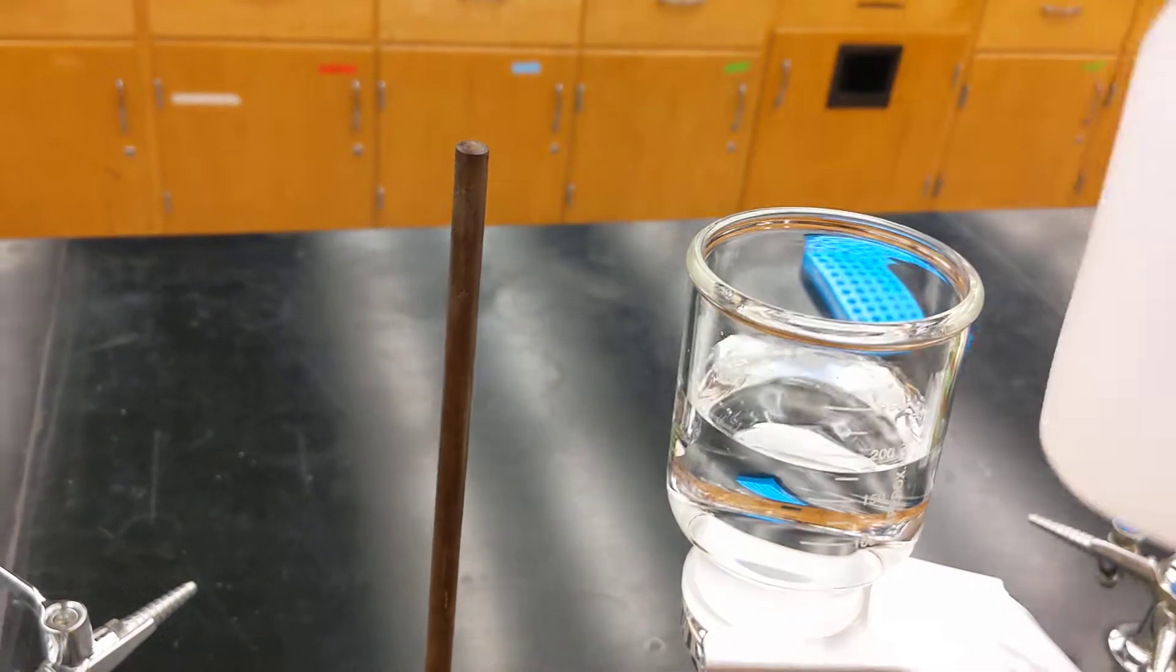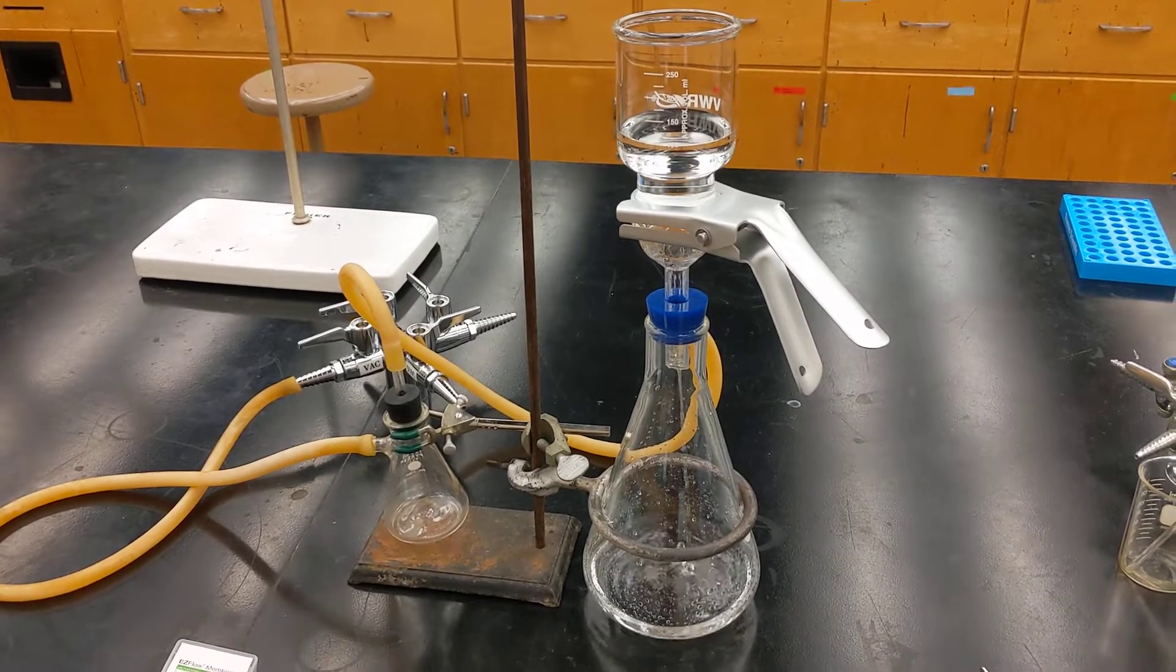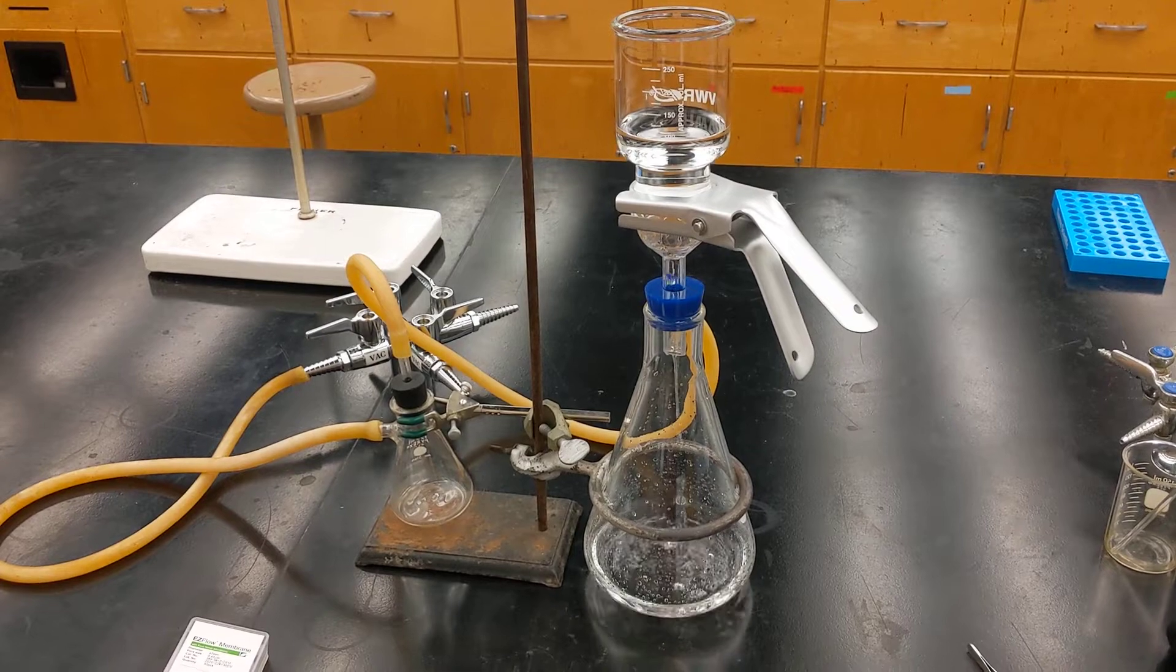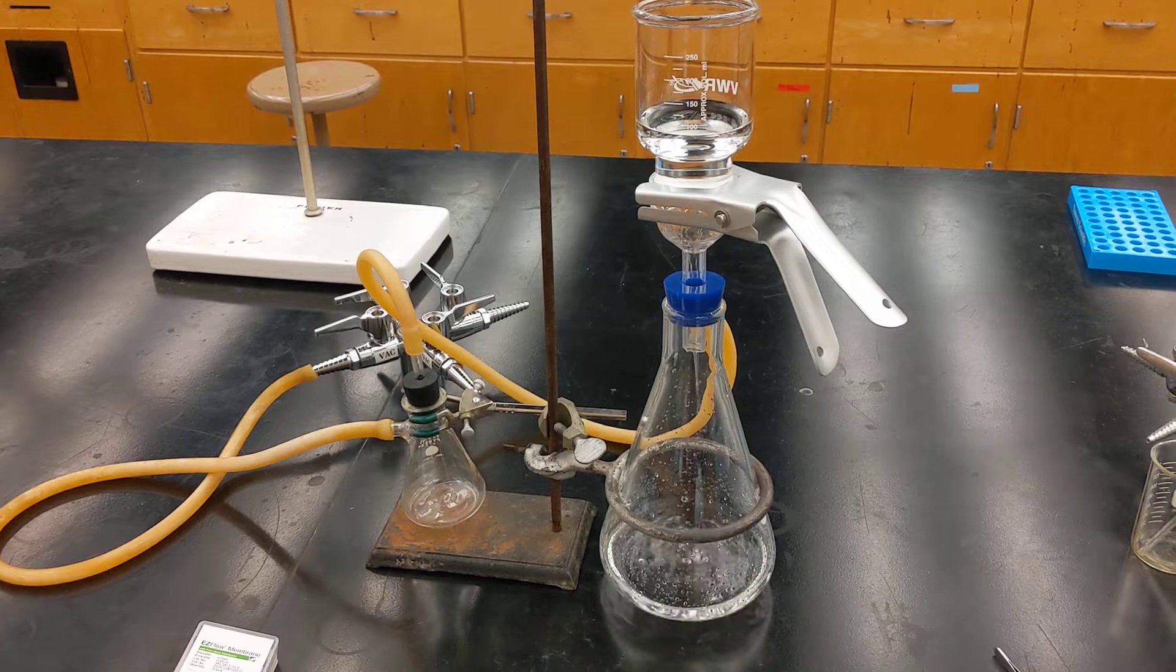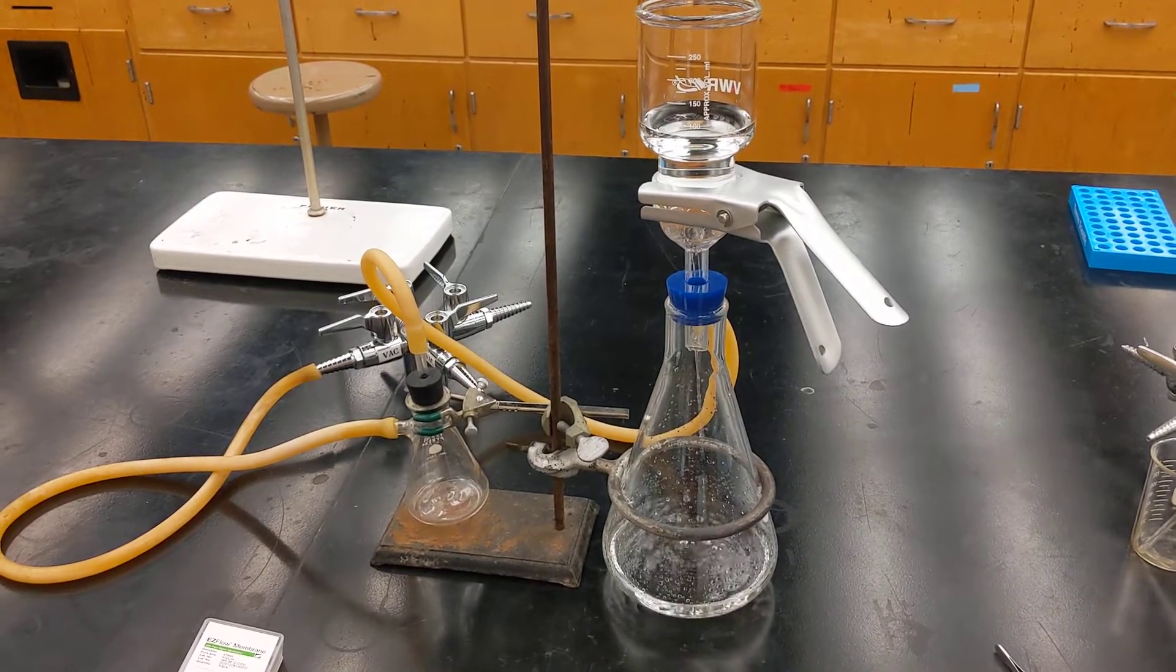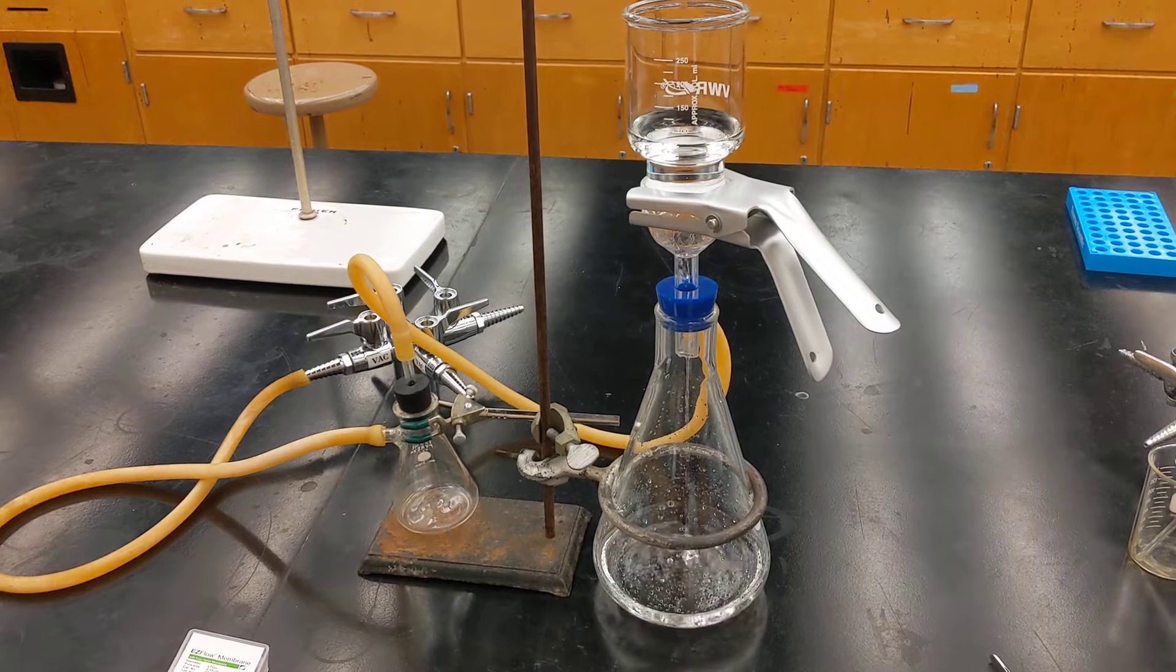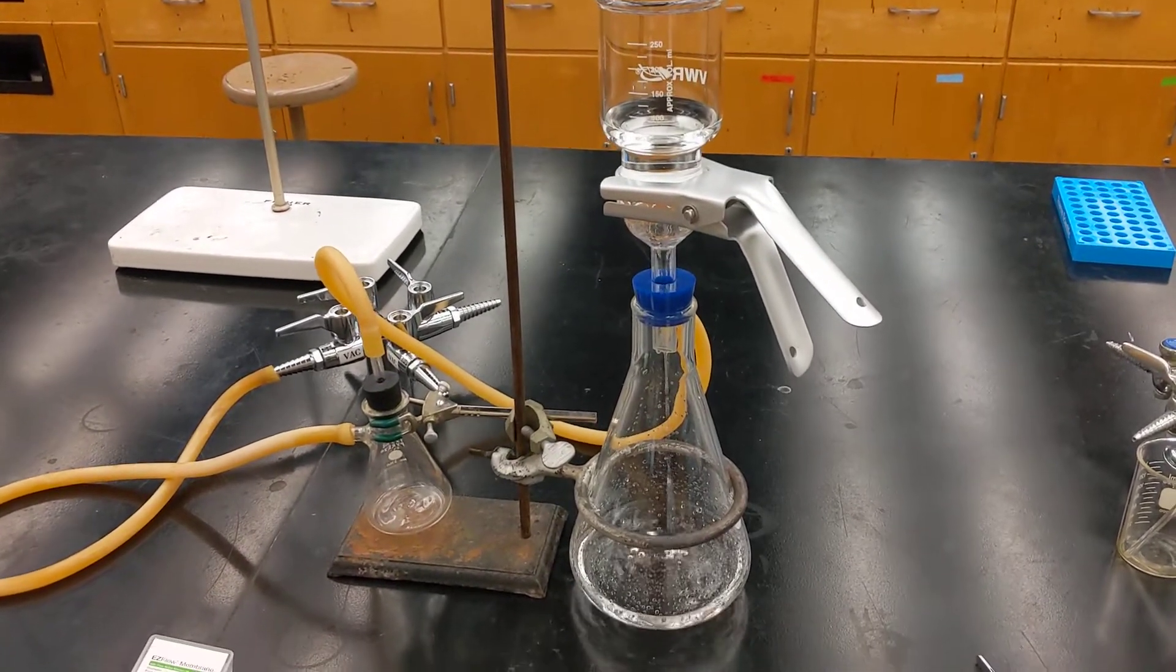Here's the setup about a minute later. You can still see it flowing nicely. It gives you a sense for the time. If you have a pretty turbid, dirty sample, it may be helpful to do a syringe filter first just to get some of that larger stuff out before you do the 0.45 vacuum filter. Otherwise it can take too long.